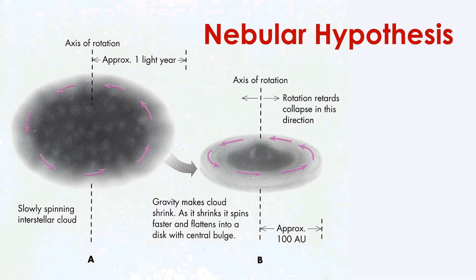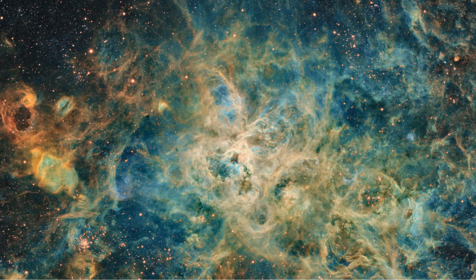This theory states that the sun, the planets, and all the other objects in the solar system formed billions of years ago from a rotating cloud of gas and dust. Most, if not all, star systems in our universe may be created through this process. A nebula is a cloud of gas and dust. The solar nebula that birthed our solar system must have consisted primarily of hydrogen, helium, and rocky dust-like particles.